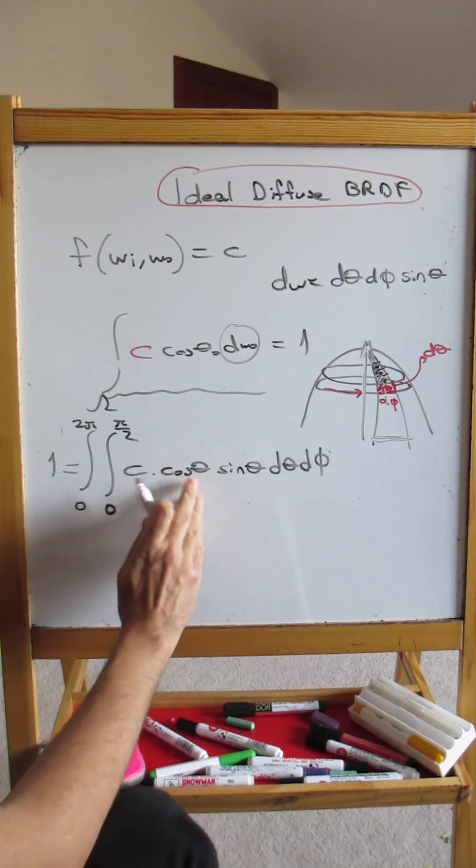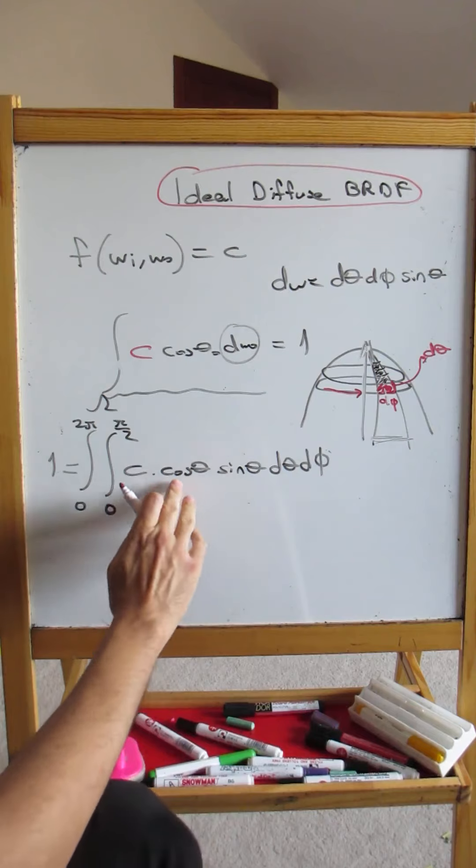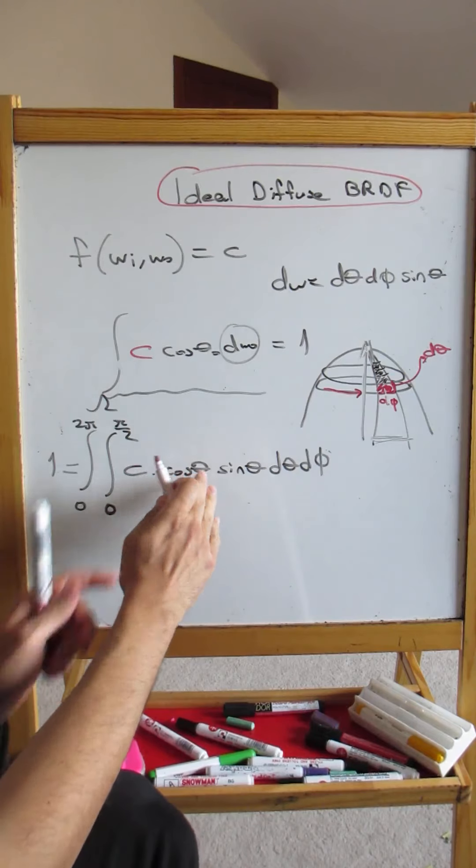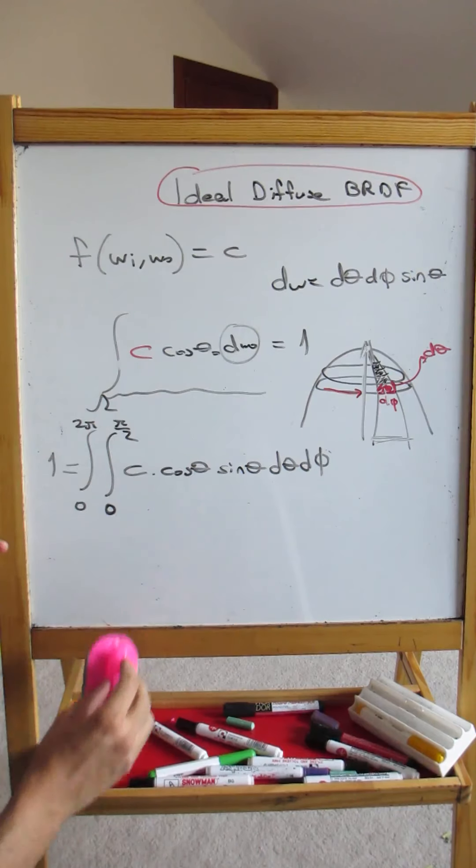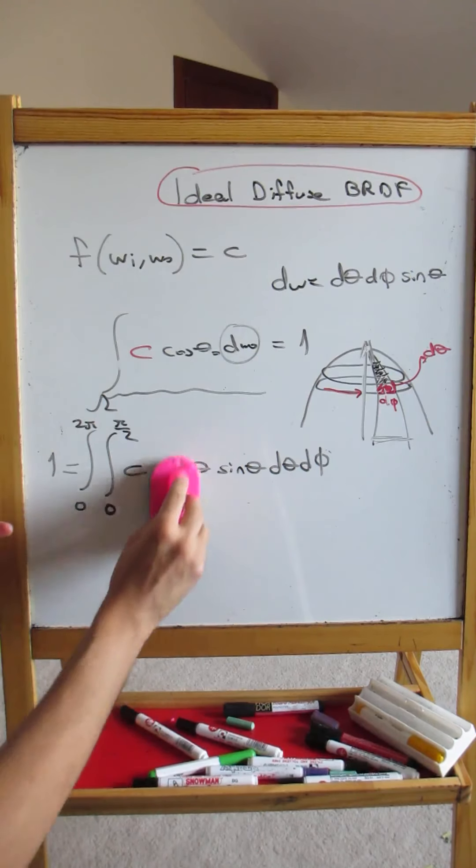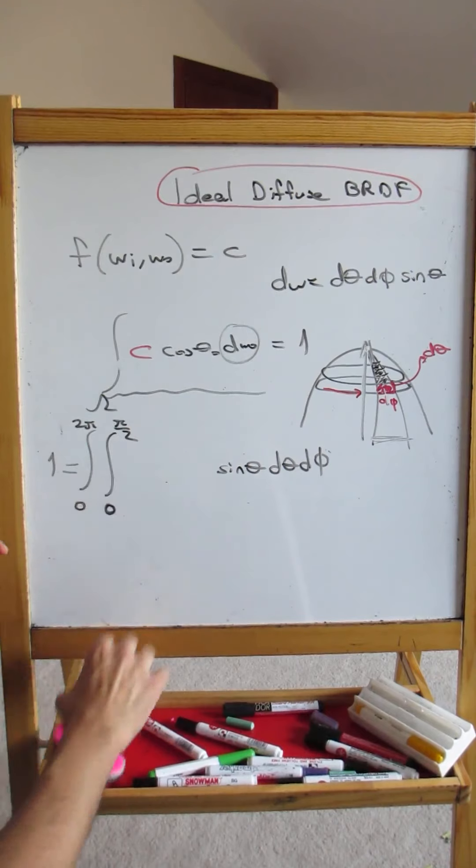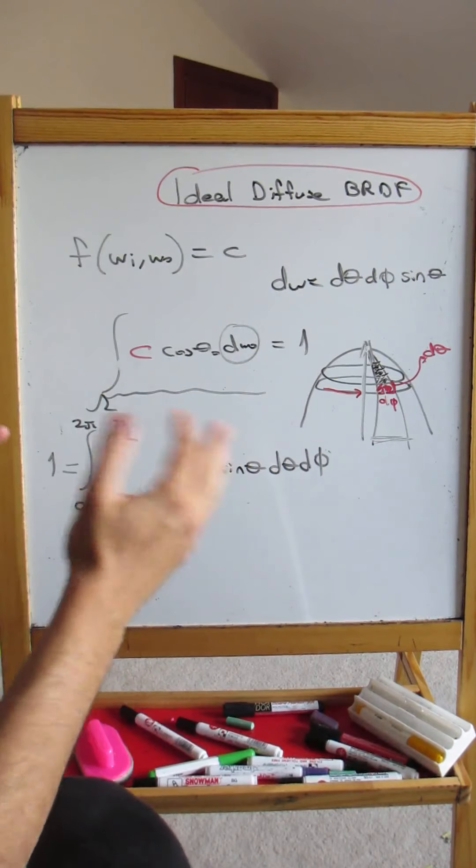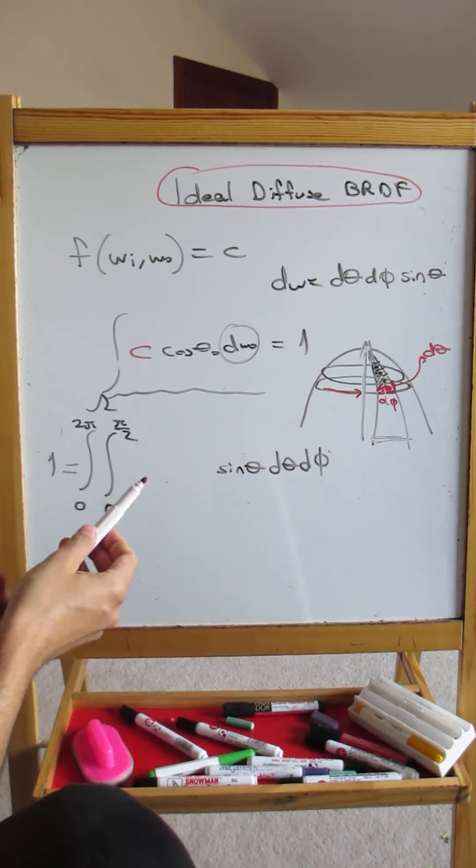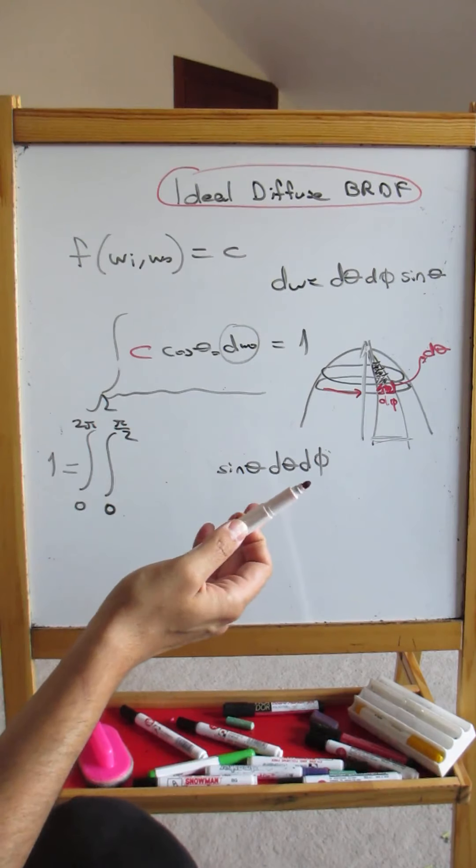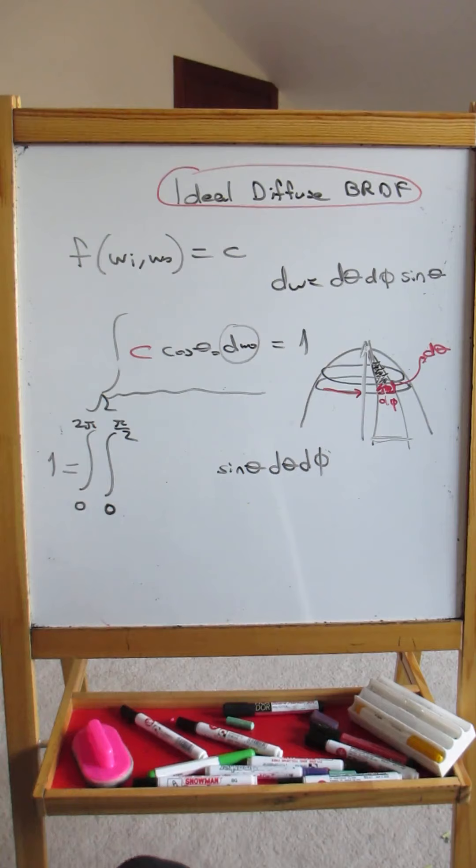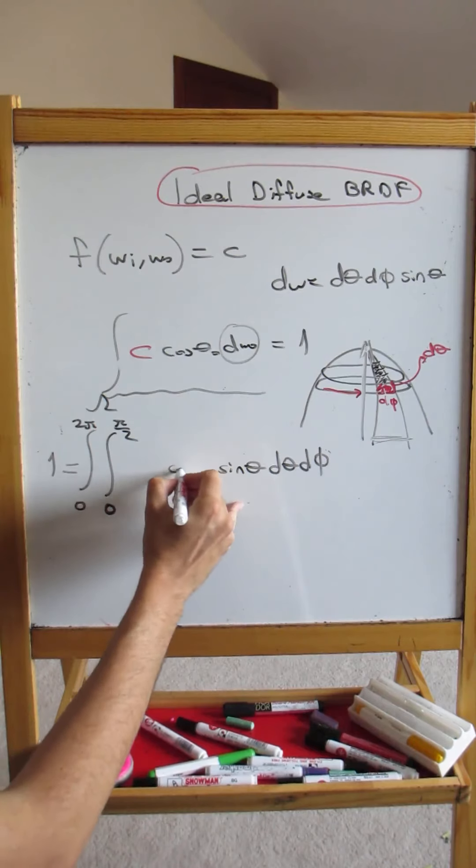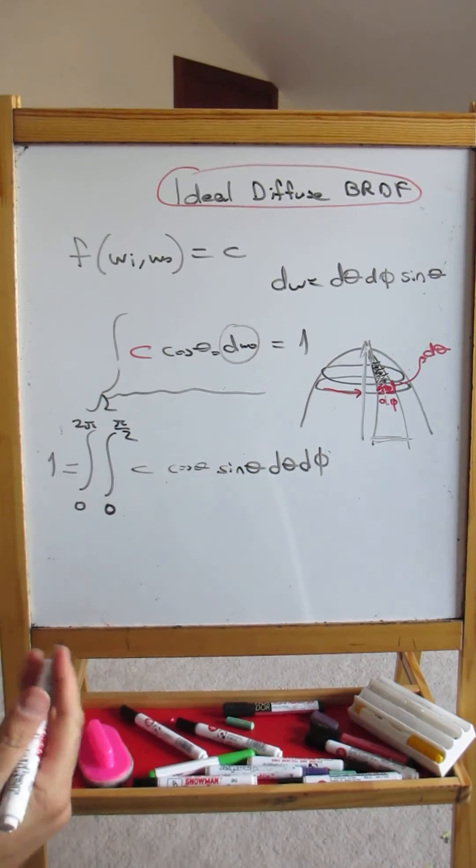Now, if you actually compute this integral, if we didn't have the cosine term here, if we didn't have the cosine term, this was going to evaluate to 2 pi. So if you, for a second, let's clean these terms. So this formula is actually the area, the surface area of a hemisphere. And we know that it should be equal to 2 pi.